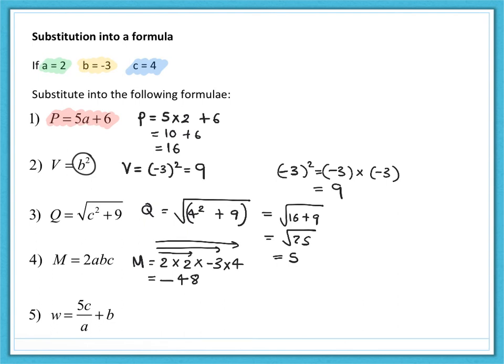And then the last one, w is equal to five lots of c divided by a plus b. So that's five times four, all divided by a, which is two, and then add the b, which is negative three. So deal with this part by part. Five multiplied by four is 20. So that's 20 over two. And then adding negative three is the same as subtracting three. So this is 10, take away three, leaving us with an answer of seven.